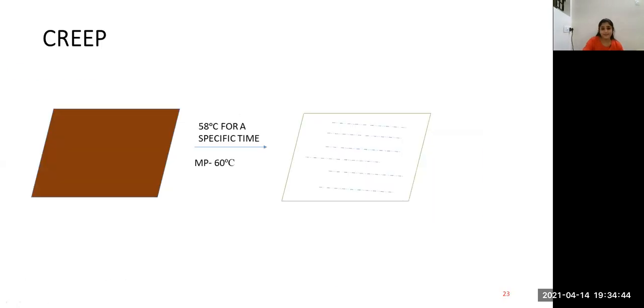Now, coming to creep. Let's suppose a metal has a melting point of 60 degrees Celsius. When it is heated to above 60 degrees Celsius, the metal undergoes transformation to a fluid form. When a metal is heated to a temperature nearing its melting point, that is nearly 58 degrees Celsius, it undergoes a deformation inside the metal. This time-dependent plastic deformation which occurs inside the metal under a constant load is called creep.